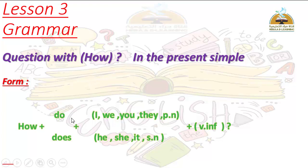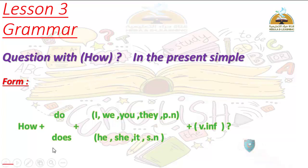We use Do with: I, We, You, They, and plural nouns — plus verb infinitive, meaning the verb stays in its base form with no additions. If we use Does, it comes with: He, She, It, or a singular noun — also plus verb infinitive. The verb stays as infinitive in question form.